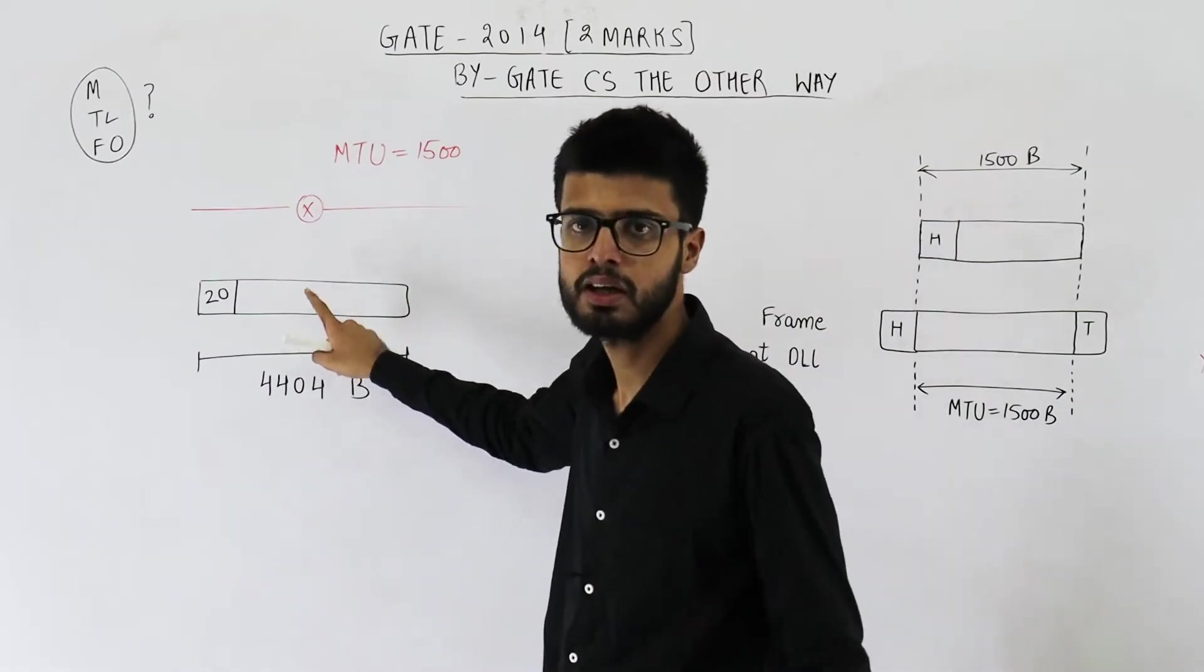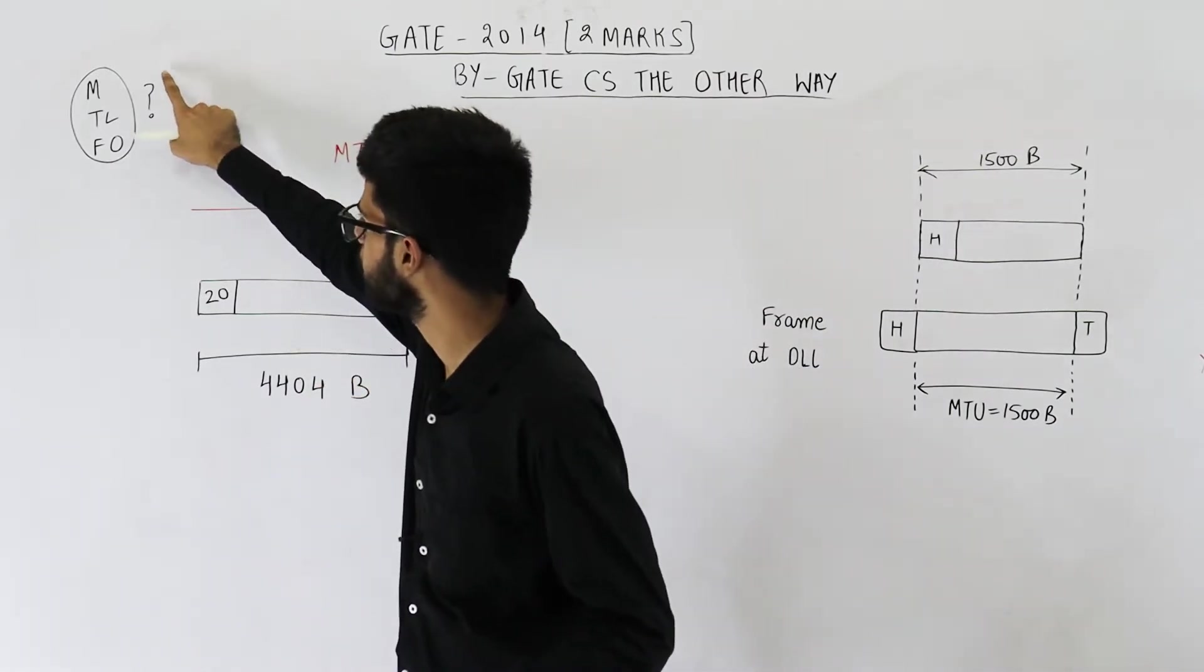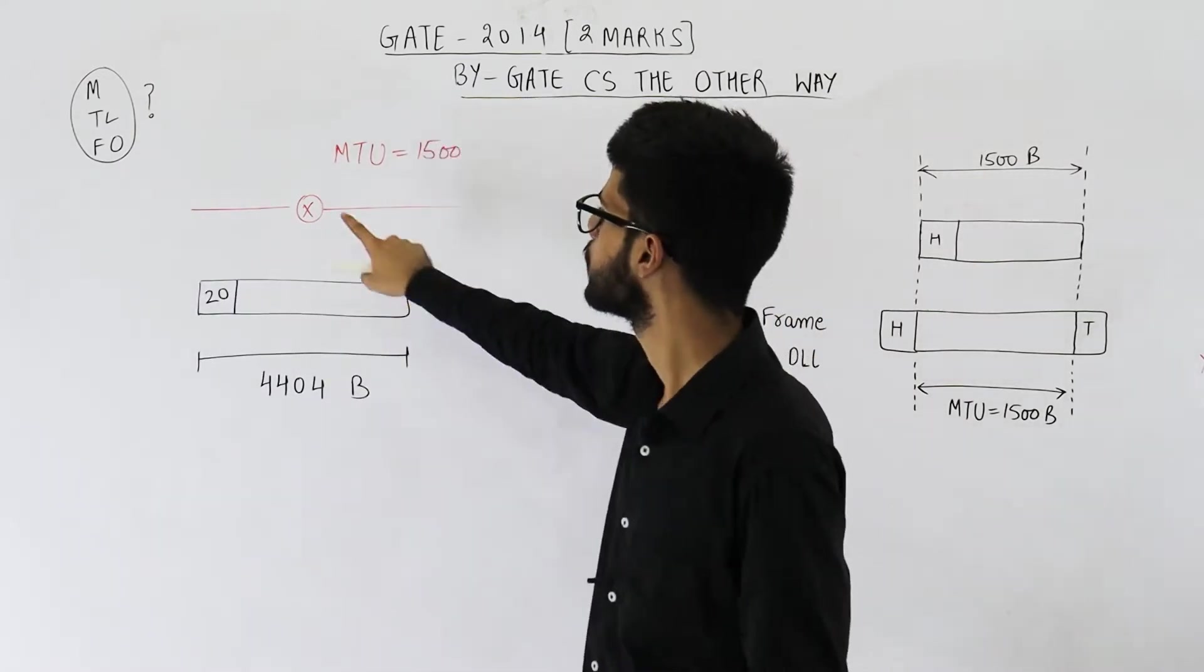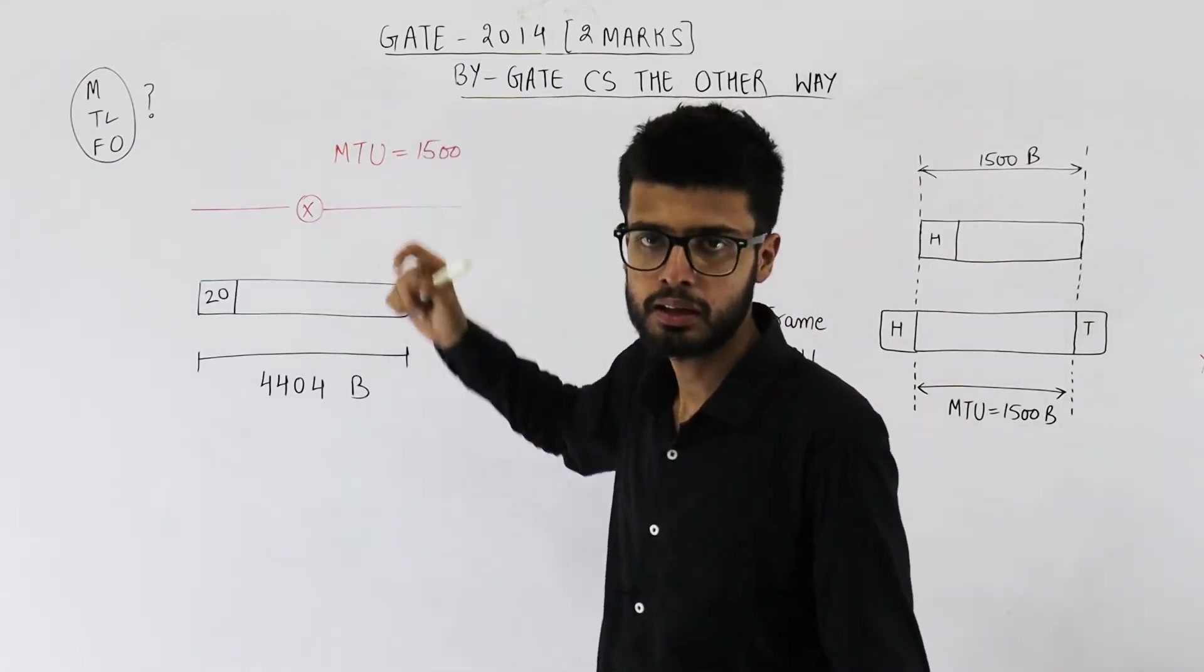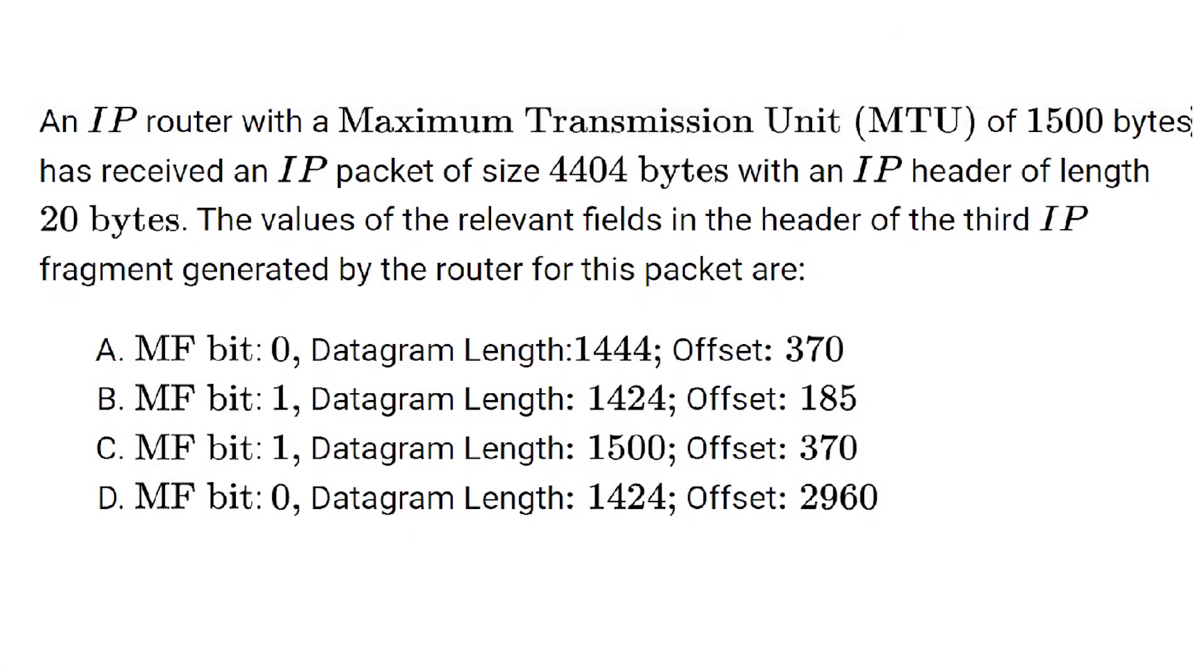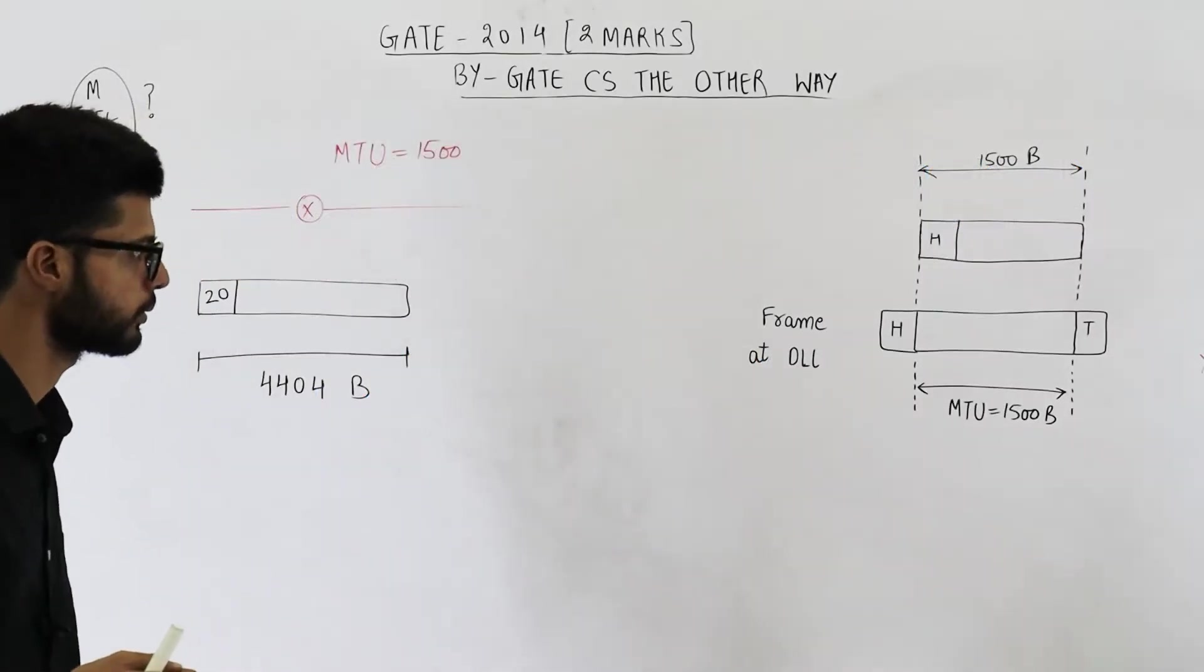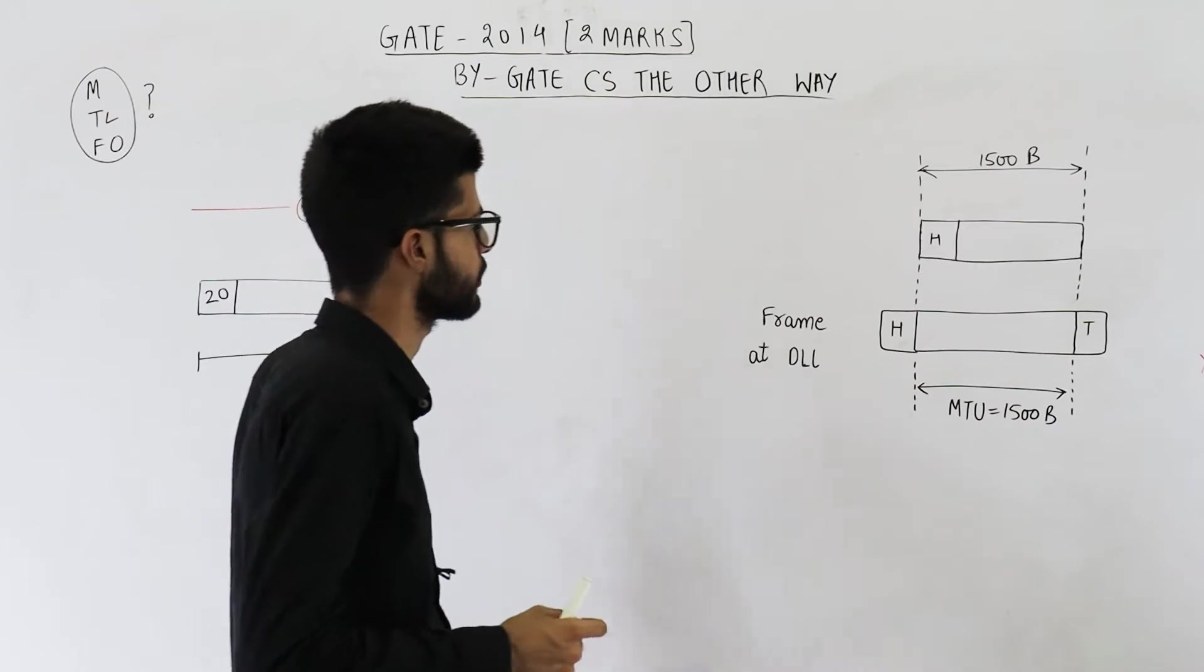The router is going to fragment this. What is M-bit, total length, and fragment offset for the third fragment that this router will create? Now I'll display the image of this question. You can have a look at the four options. Now let's start this question.